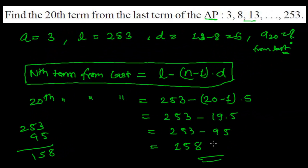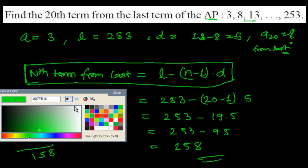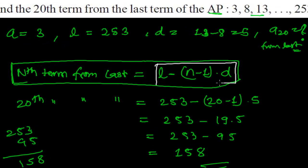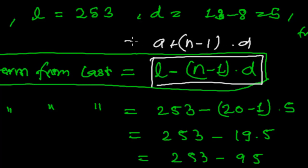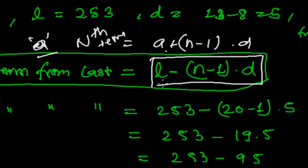So this is how we solve for the nth term from the last. The formula is: L minus (N minus 1) times d. Keep this formula in mind. If the problem asks from the starting point, then the formula is A plus (N minus 1) times d. Since we are working from the last point, we use L minus (N minus 1) times d.